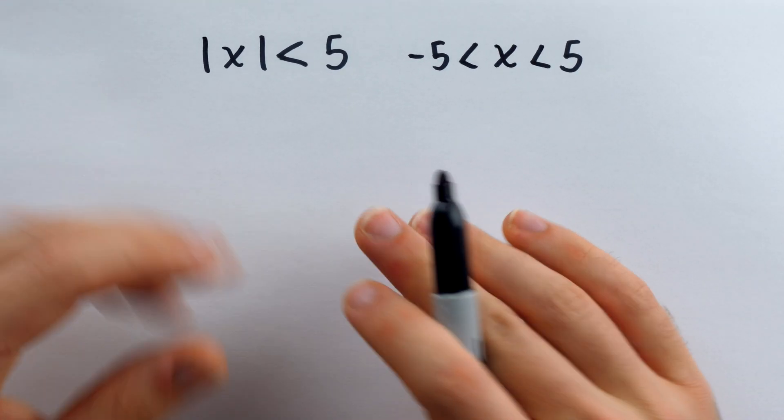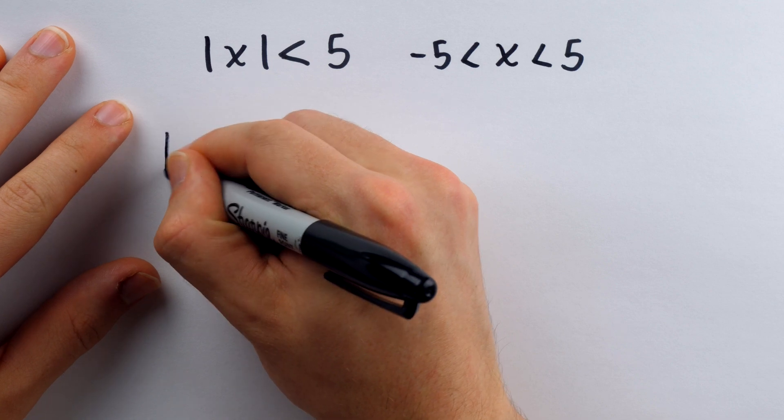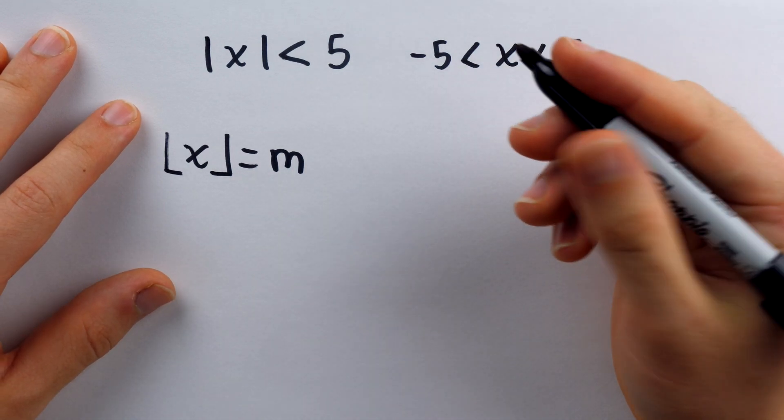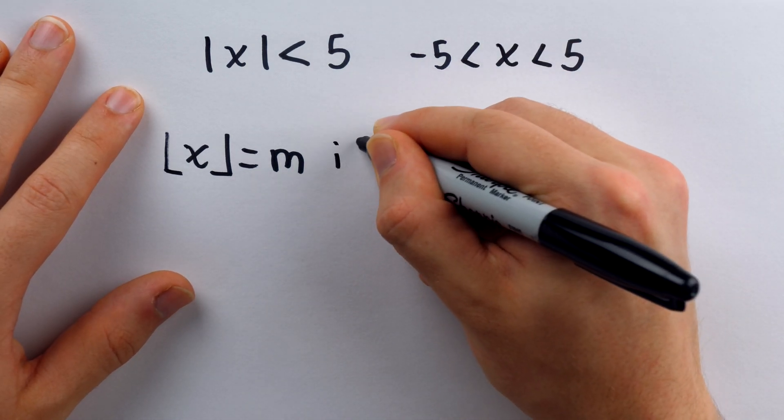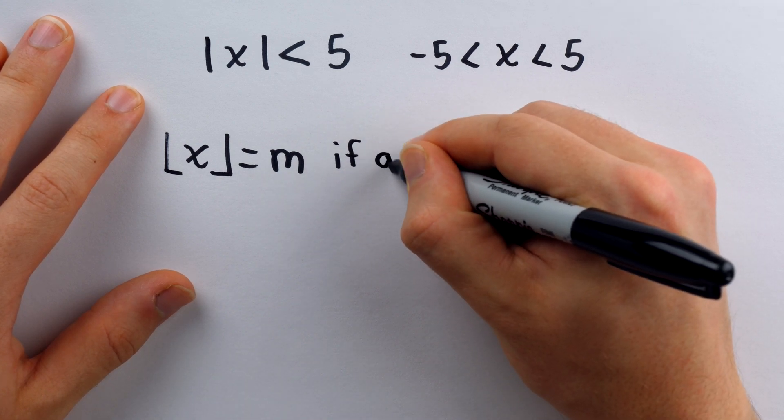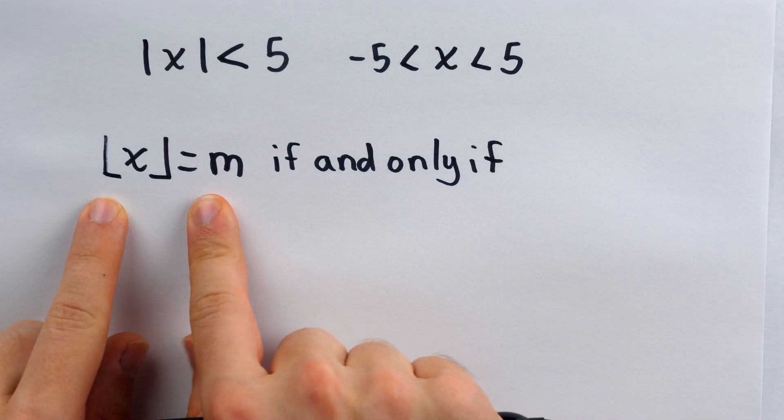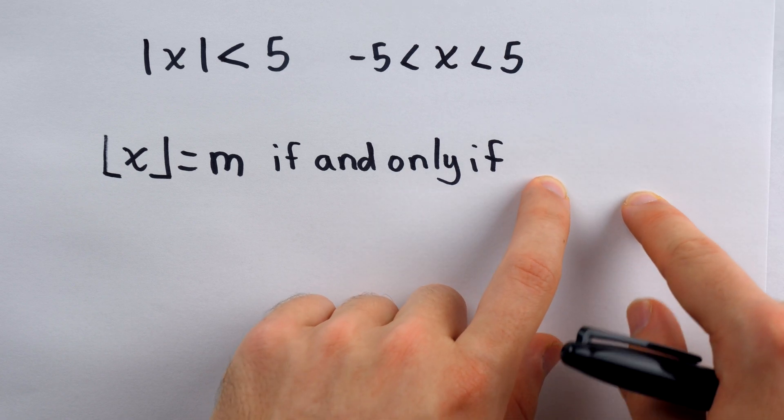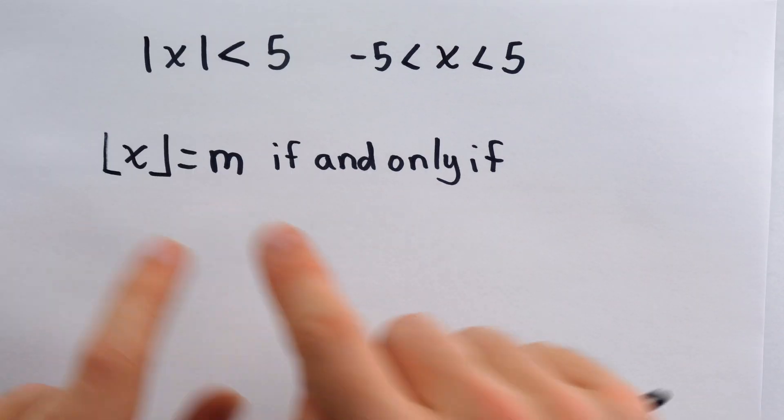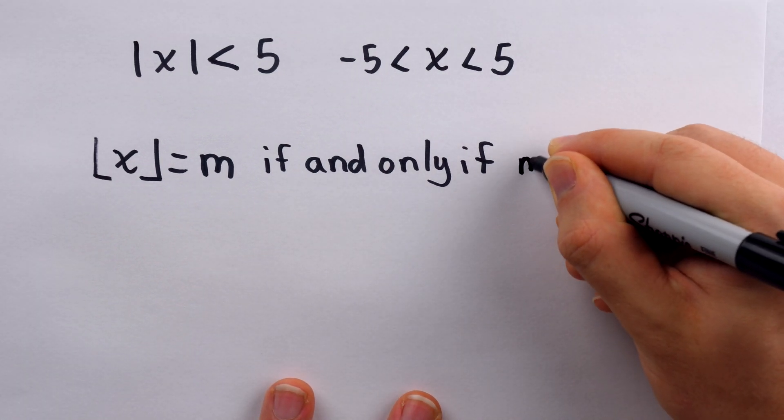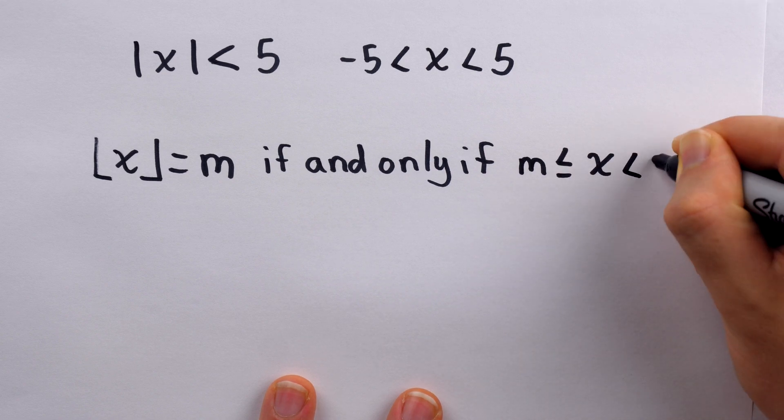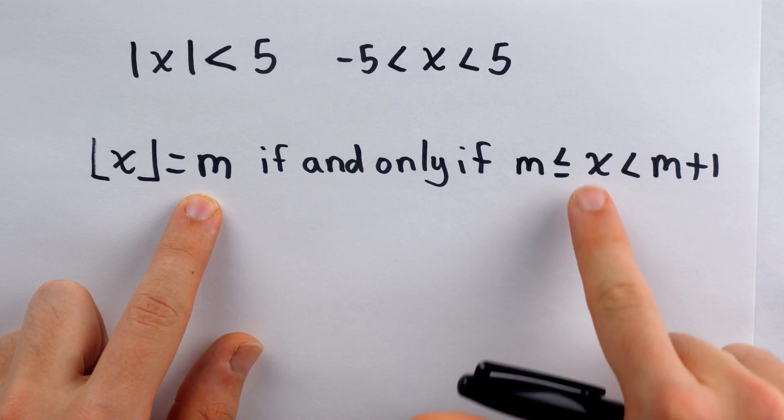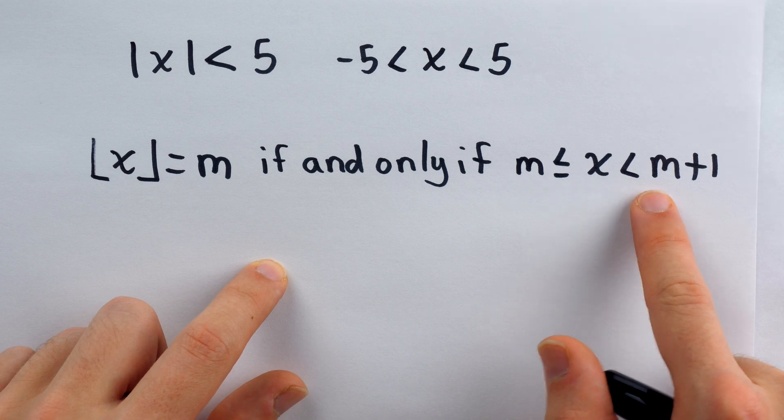We have a similar thing that we can do for a floor function equation. If we have the equation that the floor of x is equal to m, this is equivalent to a particular inequality. To express that equivalence between things, we use the phrase if and only if. This means that if the thing on the left is true, then the thing on the right is true. But also, if the thing on the right is true, the thing on the left is true. So either bit of information would imply the other. And what we have on the right is that m is less than or equal to x is less than m plus 1.